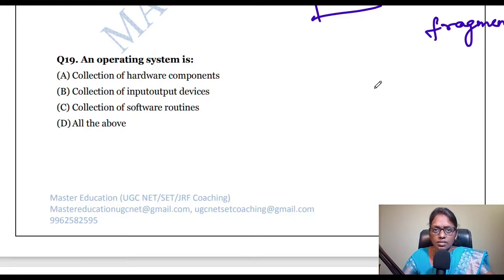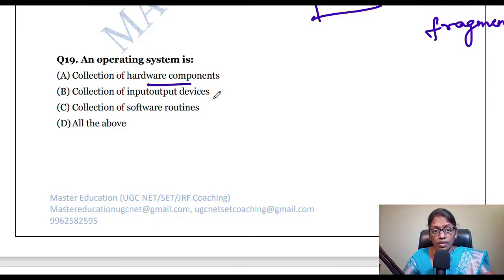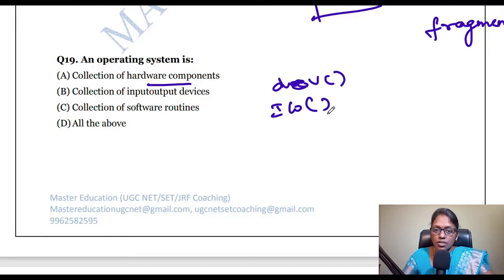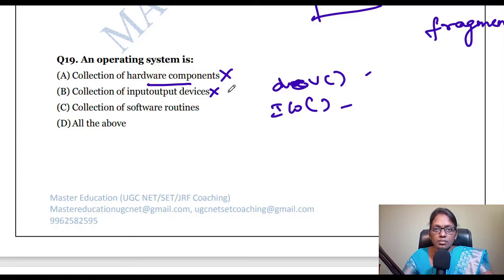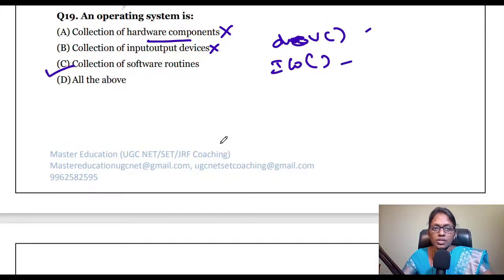What is an operating system? It is a collection of hardware components, collection of I/O devices, and collection of software routines. An OS consists of device files, I/O files — these are all software routines, which are sub-programs. A collection of I/O devices alone cannot be called an OS. The correct answer is: an OS is a collection of software routines.